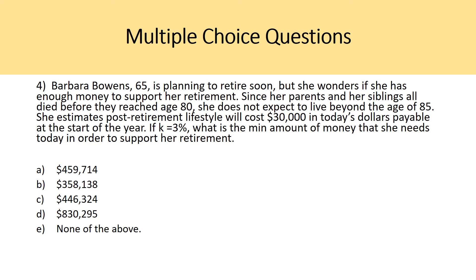Question four: Barbara Bowens, age 65, is planning to retire soon and wonders if she has enough money. Since her parents and siblings all died before age 80, she does not expect to live beyond age 85 — a 20-year retirement span. She estimates her post-retirement lifestyle will cost $30,000 in today's dollars, payable at the start of the year. If K equals 3%, what is the minimum amount of money she needs today to support her retirement? Here we're solving for the W0 variable — existing savings.